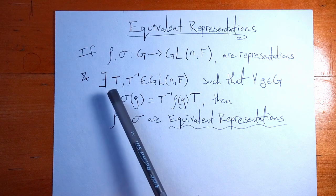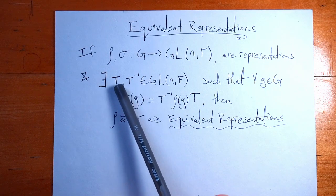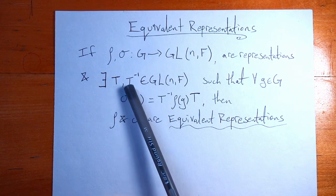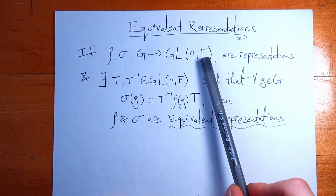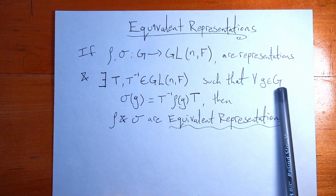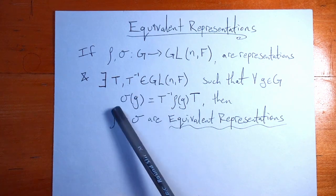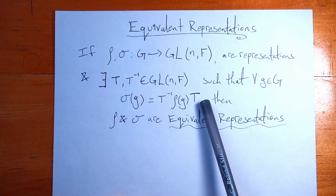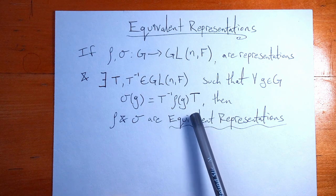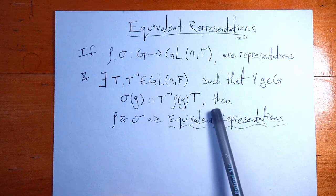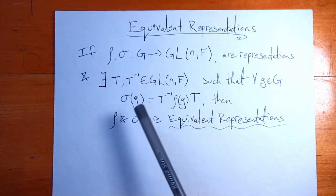And there exists a matrix and its inverse, some invertible matrix of the same degree over the same field, such that for all elements of your group, you can write one representation as this product over here. If you're familiar with linear algebra, which you should be if you're watching this series, you'll know that this is the equation for a similar matrix.